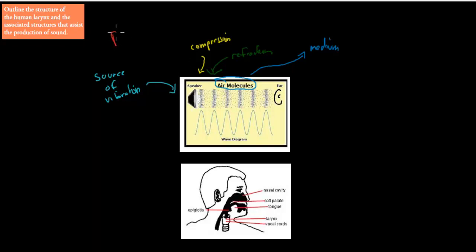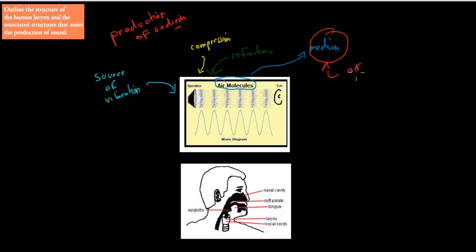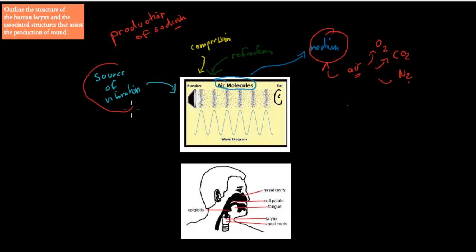We've talked about the production of sound in a couple of videos back, and we said that for the production of sound, we need to have two things. First of all, we need to have a medium for that sound to be produced in. That medium, generally for us humans when it comes to speech, would be air — air molecules, particles in the air such as oxygen, carbon dioxide, or nitrogen gas particles. We also need to have a source of vibrations — vibrations just means that something goes back and forth.